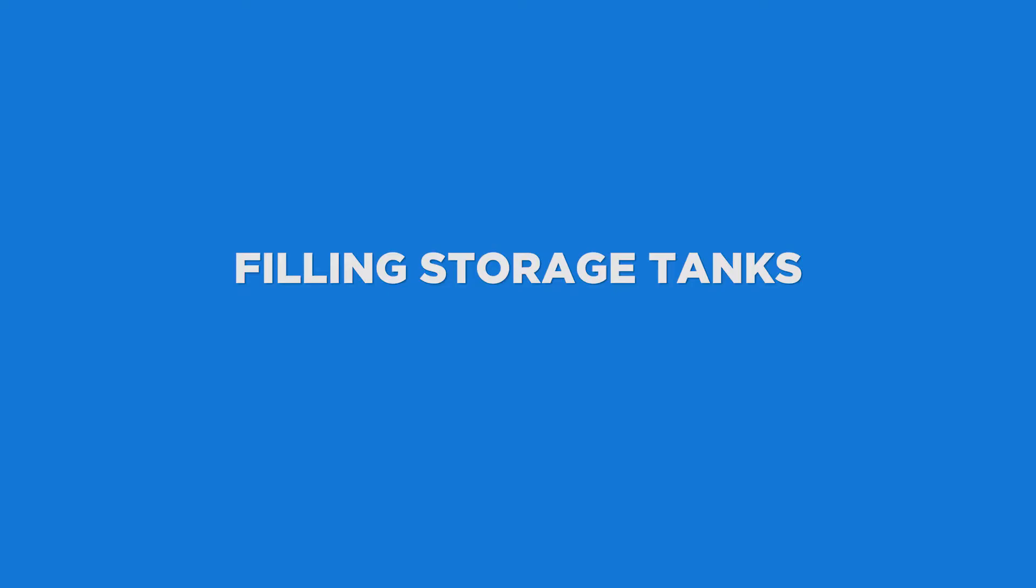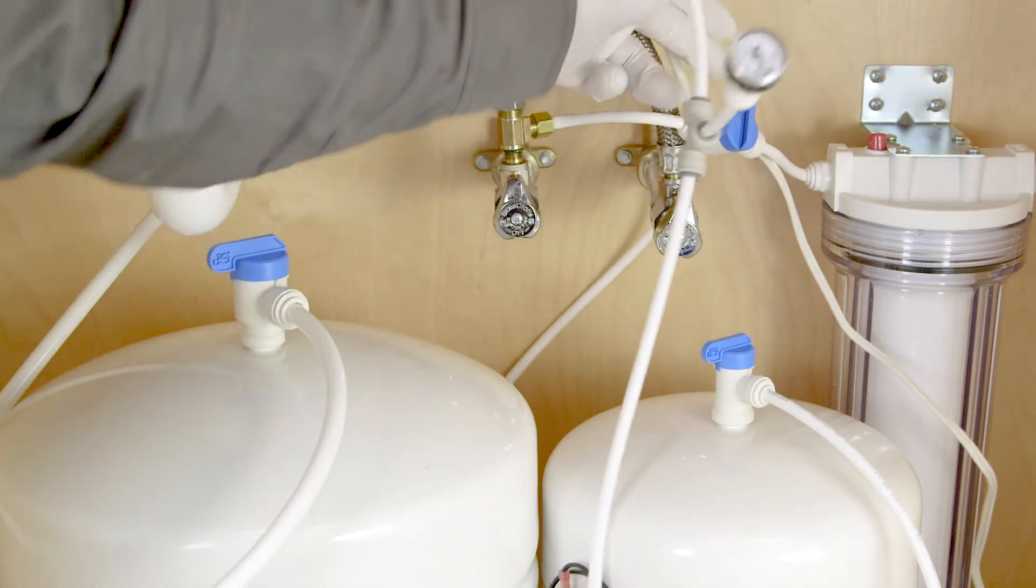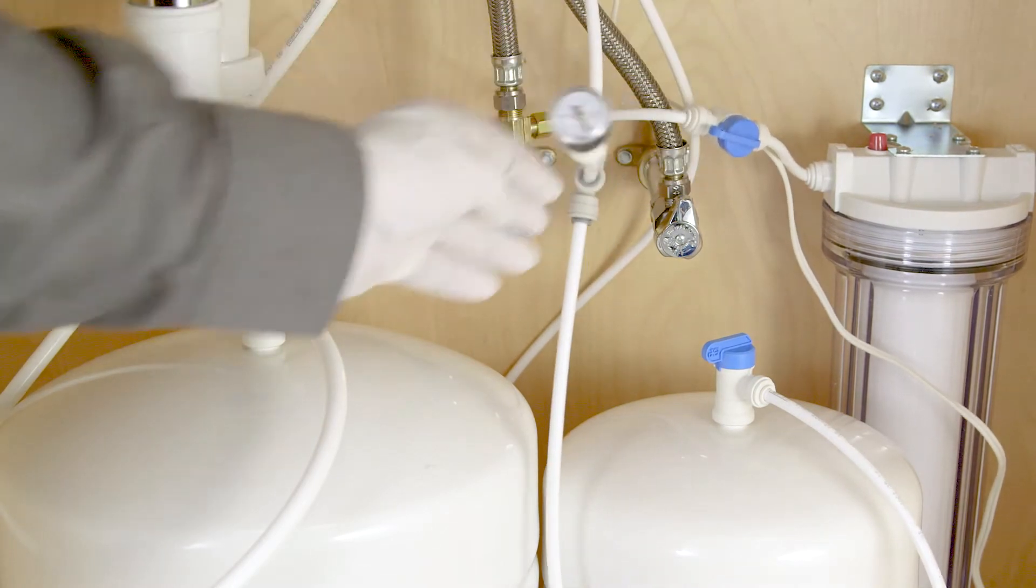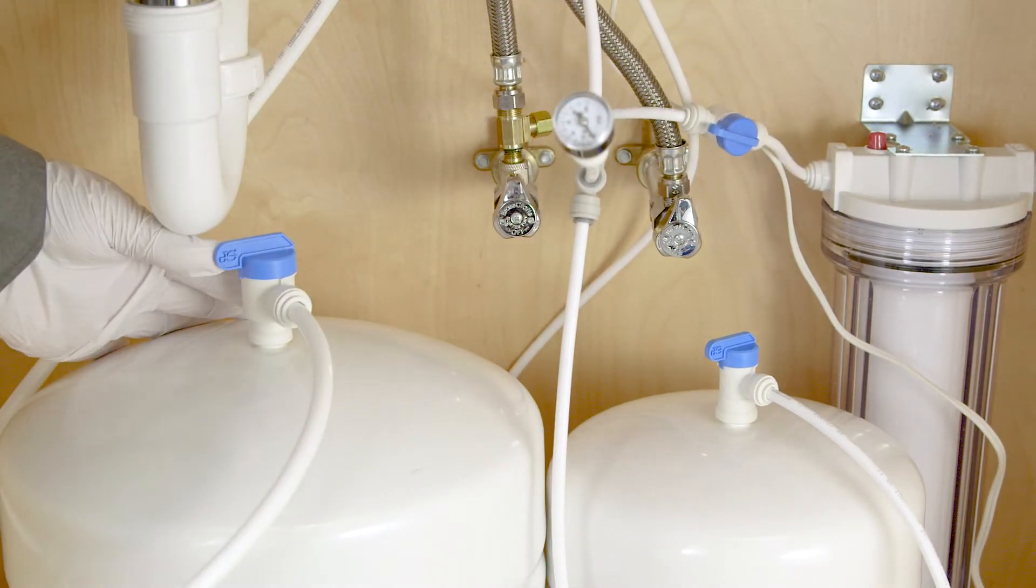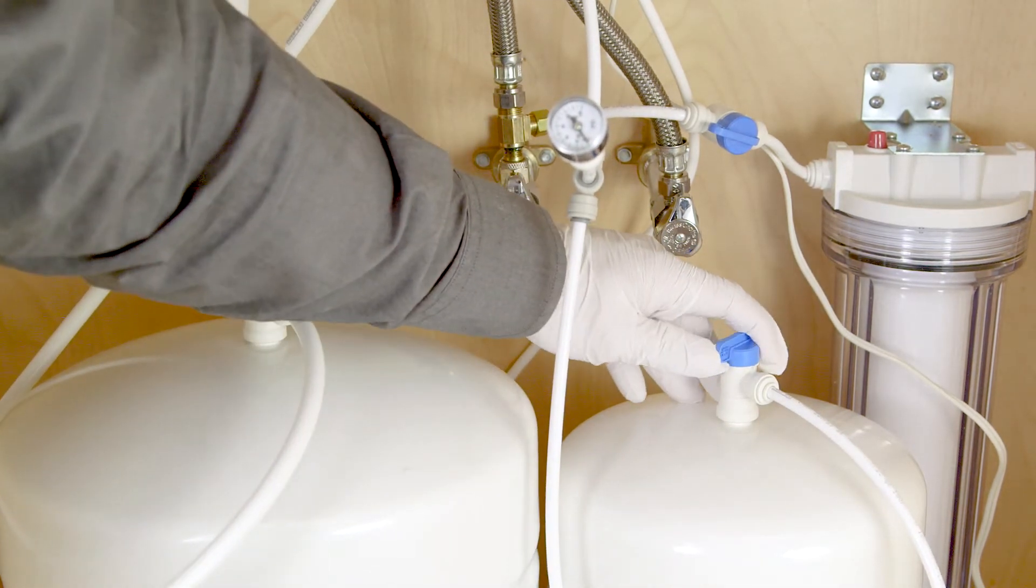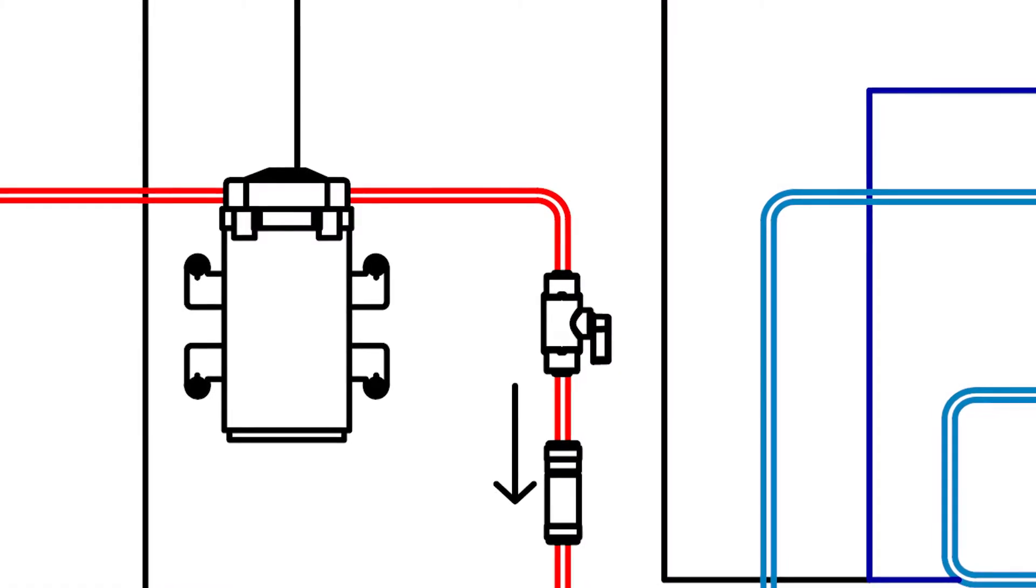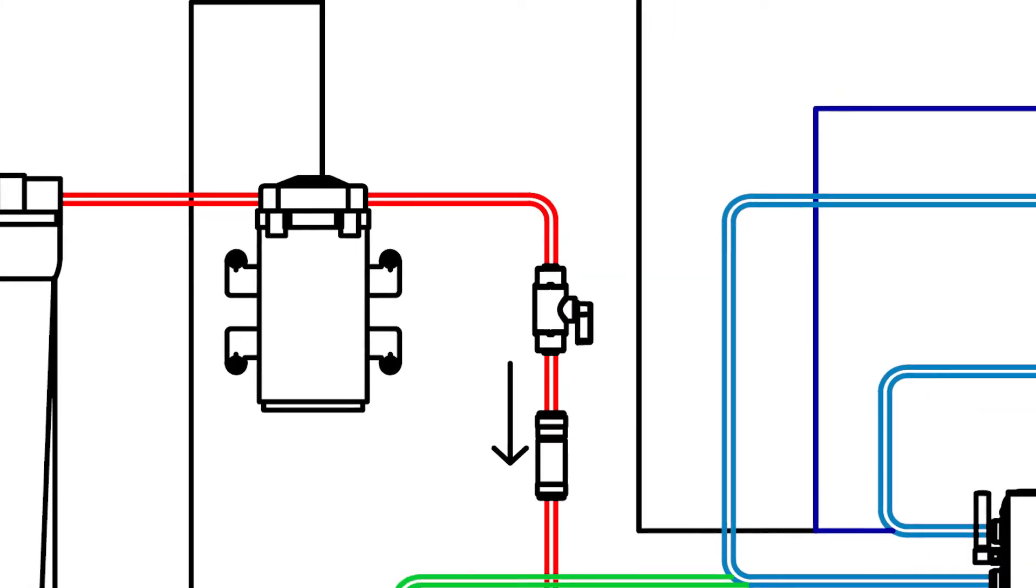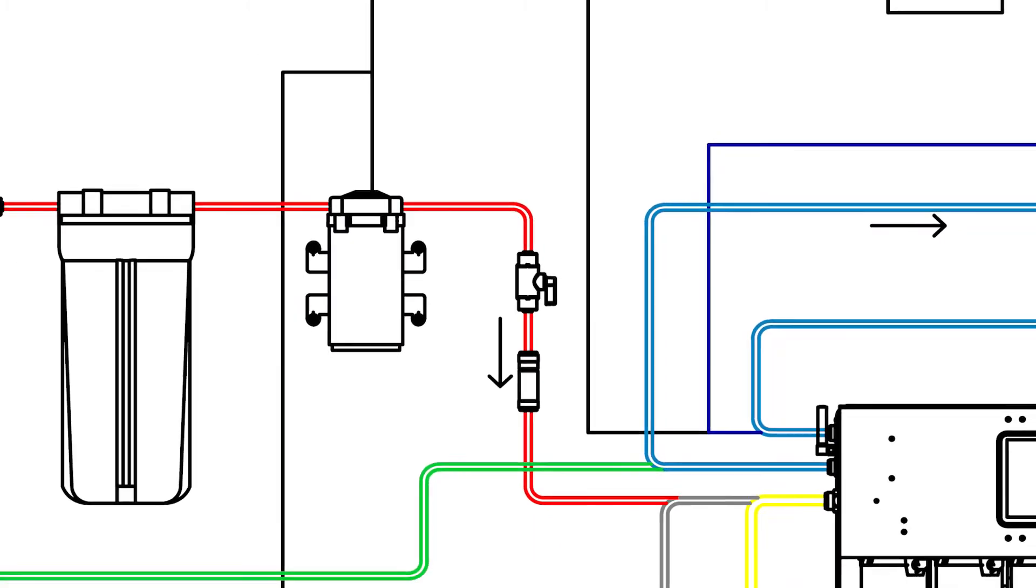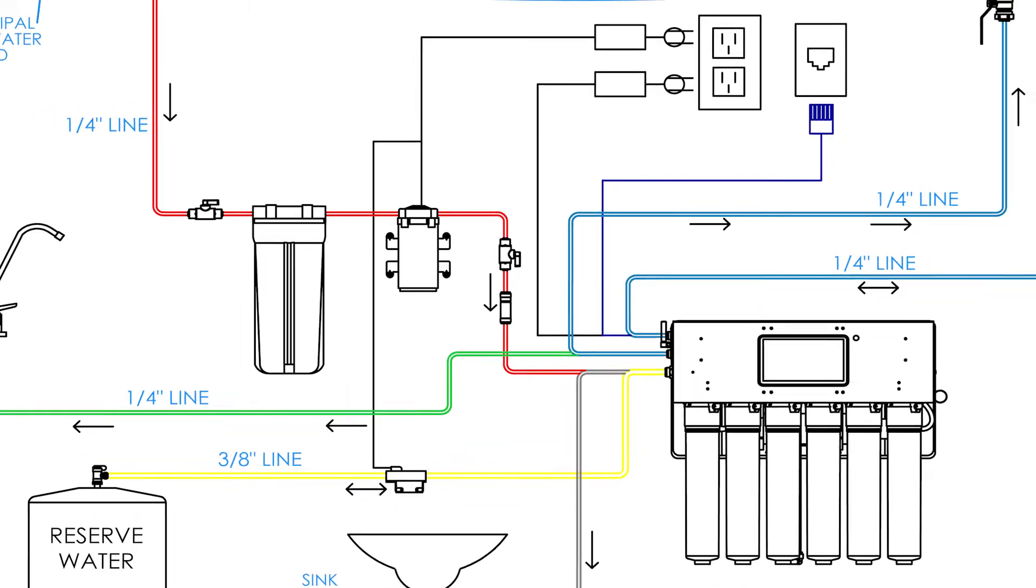Filling the storage tanks. Now you can open the source water valve at your municipal supply. If you have a pre-filter, check that any shutoff valves in front of or behind the filter housing are in the open position. To open the RO reserve and dental water tanks, turn the tank ball valve knob in line with the tubing. You can visually confirm water is flowing freely to the booster pump at this point. Once you have water flowing to the booster pump, you can plug it in and verify it's working. The RO and dental tanks will slowly begin to fill.